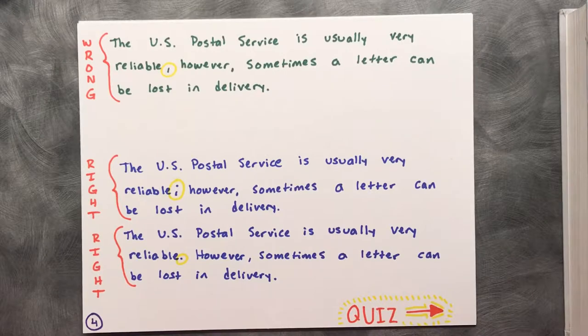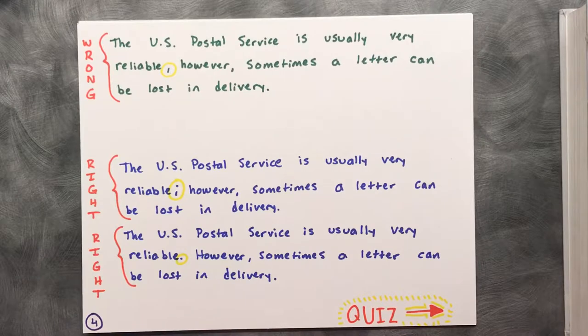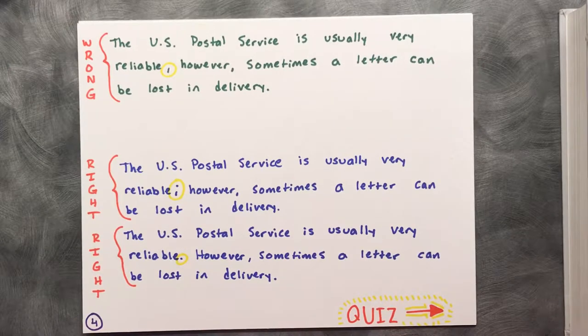Again, there are two independent sentences here. Transition words like however, therefore, nevertheless, consequently, and then cannot be used to connect two sentences.